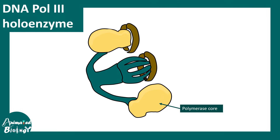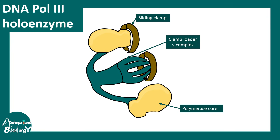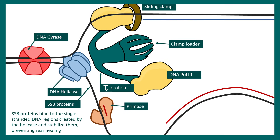DNA polymerase 3 is the key enzyme involved in prokaryotic replication. It has different components — almost 9 subunits. There is the clamp loader or gamma complex, and the sliding clamp, which is loaded by the clamp loader complex, along with the tau protein. Crystallographic structural analysis reveals these structural details, each of which reflects on the enzyme's functionality.